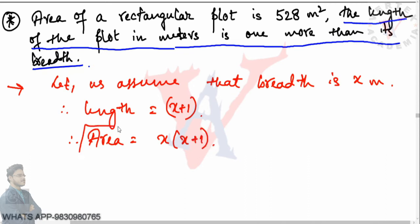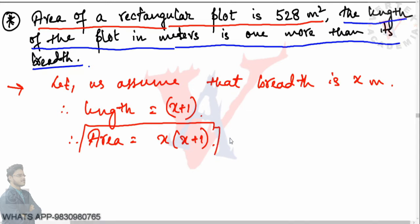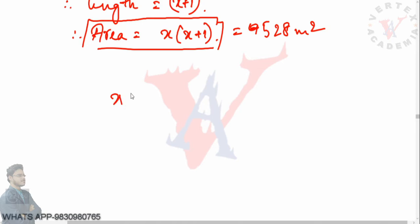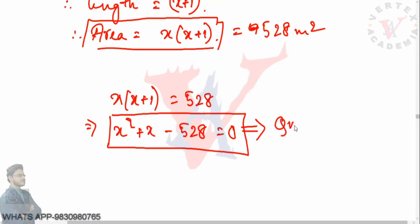We have found the area as x(x+1), and we have to equate this to the given area. From the first line of the problem, the area of the rectangular plot is 528 square meters. So we get x(x+1) = 528, which gives us x² + x − 528 = 0. From a simple word problem, we have successfully framed a quadratic equation.